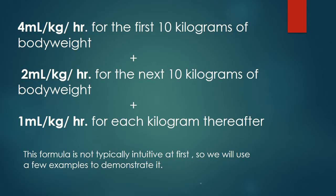The 4-2-1 formula can be explained as: 4 milliliters per kilogram per hour for the first 10 kilograms of body weight, plus 2 milliliters per kilogram per hour for the next 10 kilograms of body weight, plus 1 milliliter per kilogram per hour for each kilogram thereafter. By adding these three components we can calculate the intravenous fluid maintenance rate of an adult or pediatric patient. This formula is not typically intuitive at first, so we will use a few examples to demonstrate it.